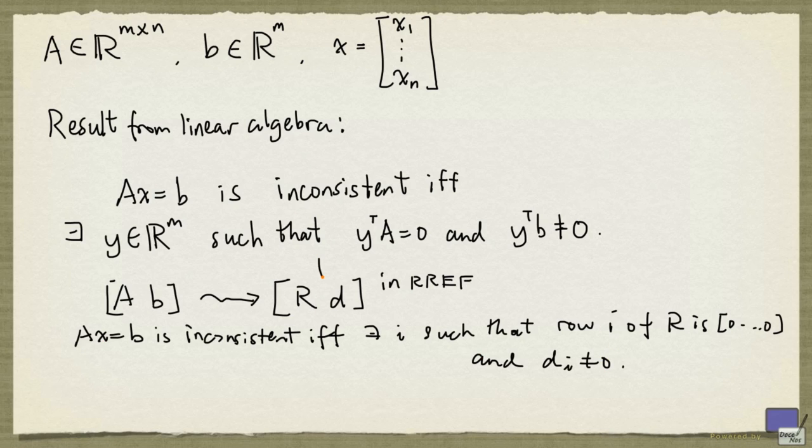But since we obtain this matrix by row reduction, there exists a matrix M, such that M times A is equal to R, and M times B is equal to D.